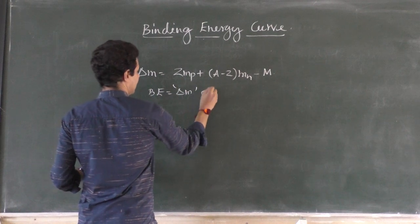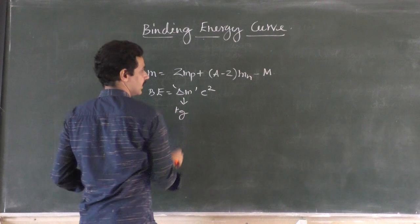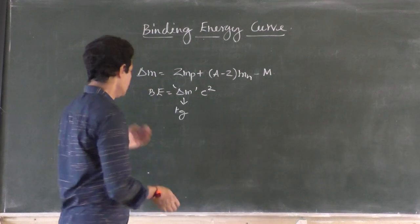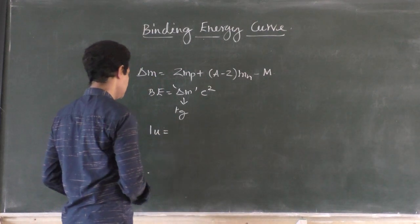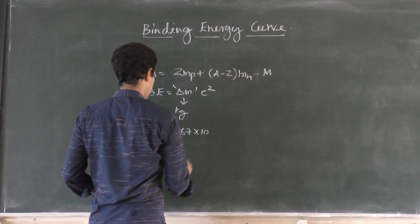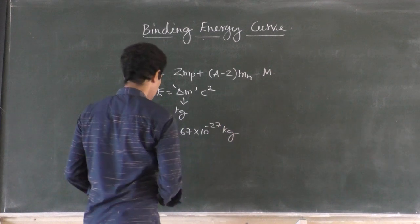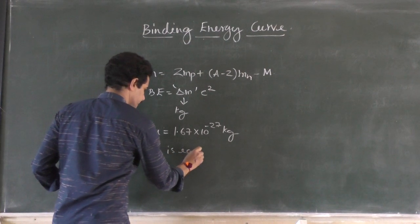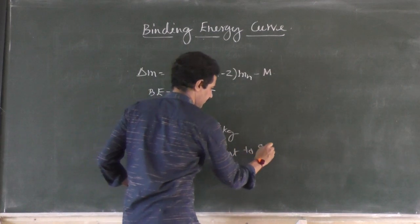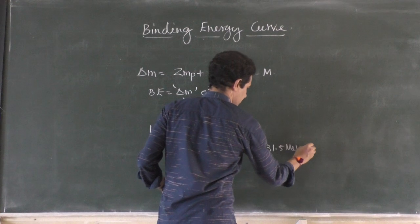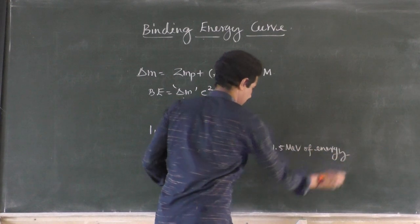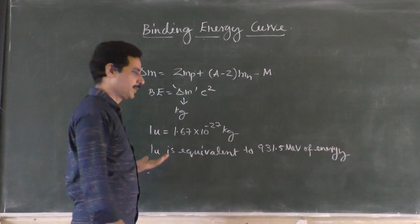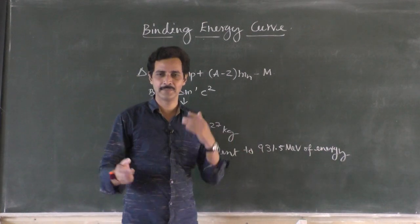If you convert the mass defect into energy, that gives the binding energy. So delta M, if it is in kg, then delta M c squared. If you want to use atomic mass units: 1U is 1.67 × 10⁻²⁷ kg, and 1 atomic mass unit yields 931.5 MeV of energy. So if you lose 10U, it is 10 times this much — direct multiplication is possible.